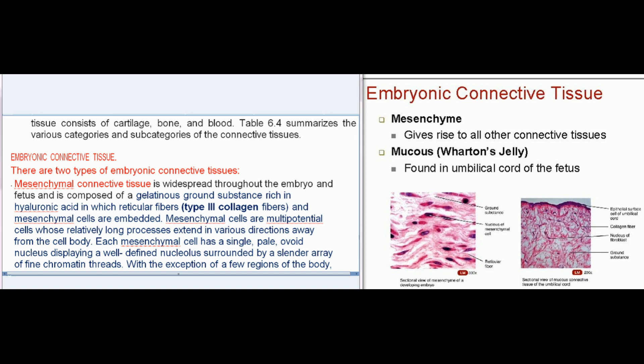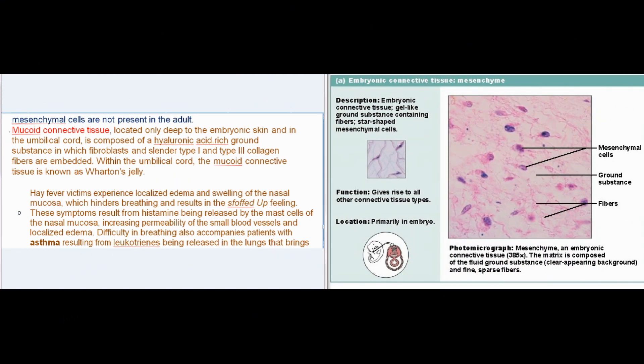There are two types of embryonic connective tissues. Mesenchymal connective tissue is widespread throughout the embryo and fetus, composed of a gelatinous ground substance rich in hyaluronic acid in which reticular fibers (type 3 collagen) and mesenchymal cells are embedded. Mesenchymal cells are multi-potential with long processes extending in various directions; each has a single pale ovoid nucleus with a well-defined nucleolus. With the exception of a few regions, mesenchymal cells are not present in the adult. Mucoid connective tissue, located deep to the embryonic skin and in the umbilical cord, is composed of hyaluronic acid-rich ground substance with fibroblasts and slender type I and type 3 collagen fibers; within the umbilical cord it is known as Wharton's jelly.